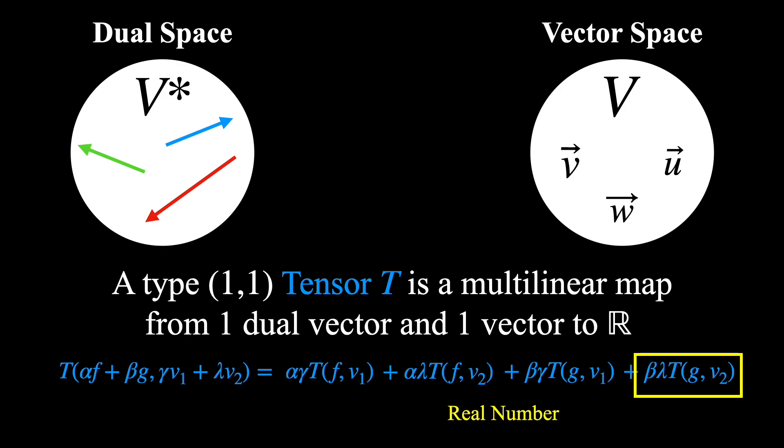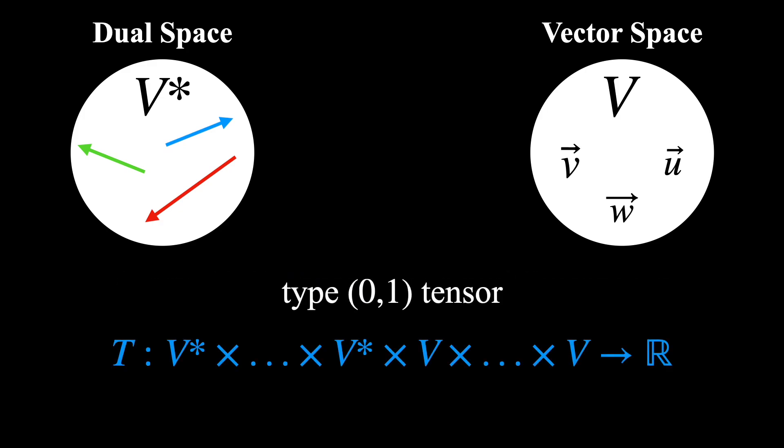Now to really let the definition of a tensor sink in, we will go through a couple simpler examples that show how tensors generalize dual vectors and vectors. First, let's consider a type (0,1) tensor. This takes one vector as an input and maps it linearly to a real number.